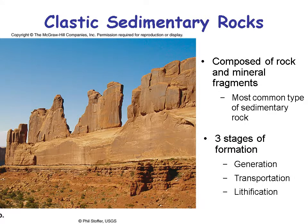A clastic sedimentary rock is composed of rock and mineral fragments, and it's the most common type of sedimentary rock. There are three stages in its formation: generation, where the material like sand is weathered off other rocks; transportation to where it gets deposited; and then the sand grains are lithified and rock is formed from those clastic grains. Lithification is the process of cementing those grains together, just like taking sand and putting glue in it.